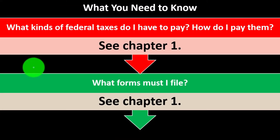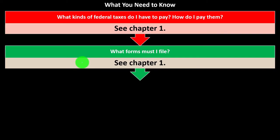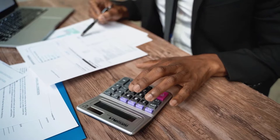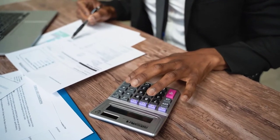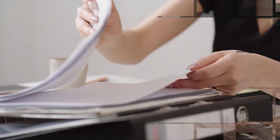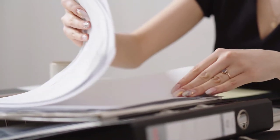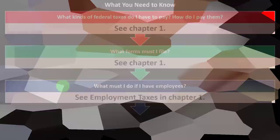What forms must I file? When you have a Schedule C type of business as a sole proprietor, it's going to be far more complex in terms of the number of forms required, as opposed to simply having W-2 income. At minimum, you'll generally need the Schedule C and the self-employment form.